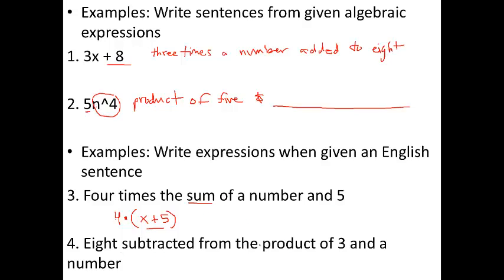8 subtracted from the product of 3 and a number. So we're going to subtract 8 from something. What are we subtracting it from? A product, which is multiplication, of 3 and any number. So we could go 3x, or we could go 3 times n, or something like that. So 3n minus 8. Are these parentheses necessary? Actually they're not necessary. But if you want to put them there, you can. We'll talk about PEMDAS coming up.